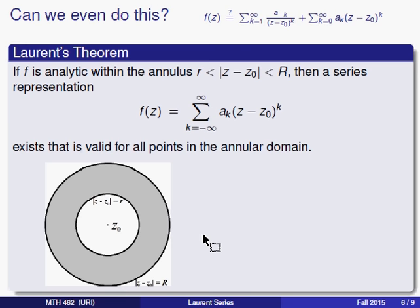Laurent's theorem says: suppose you have a function f analytic in an annulus where the modulus of (z - z₀) is bounded between r and R. Here z₀ is at the center, the inner circle has modulus equal to r, the outer circle has modulus equal to R, and we're talking about the region between these two circles. If the function f is analytic at every point inside this annular region, then you will be able to find coefficients so that f equals this infinite series — sometimes called a doubly infinite series because k can go to infinity in either the positive or negative direction.